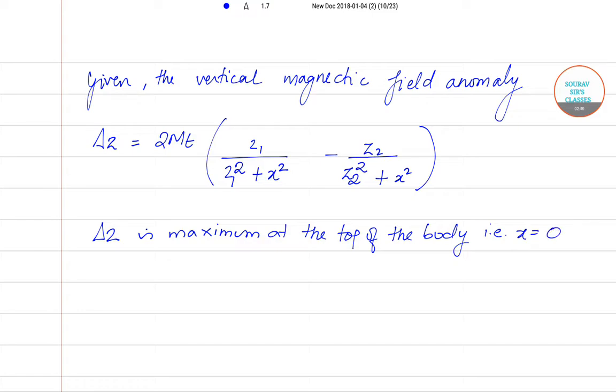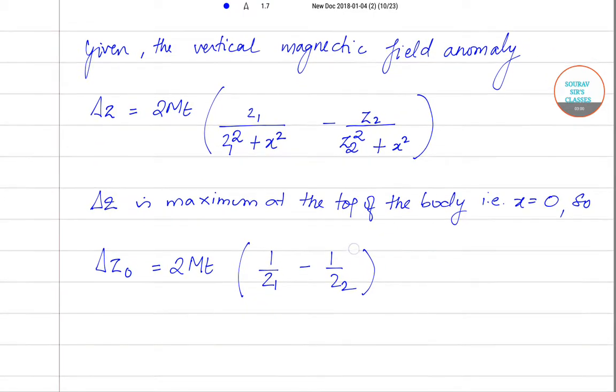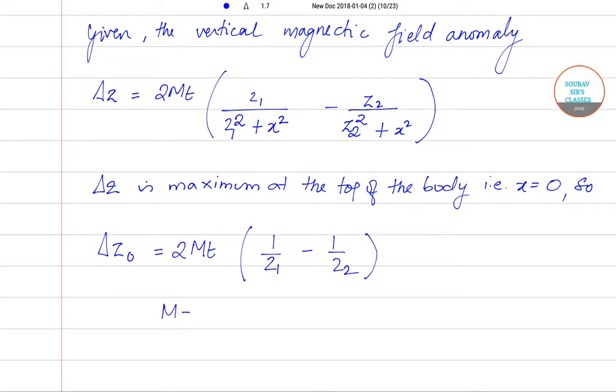So we can write, this is it actually. Delta z naught becomes equal to 2Mt bracket open 1 by z1 minus 1 by z2, where M can be written as KH, where K is nothing but magnetic susceptibility.